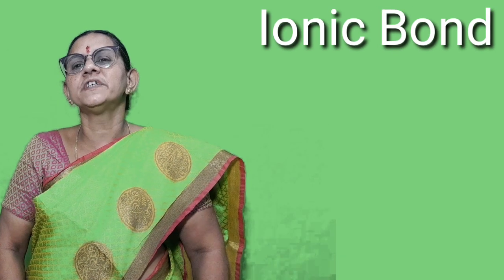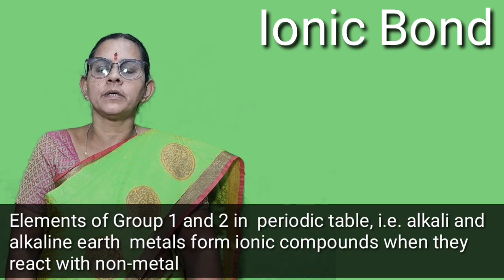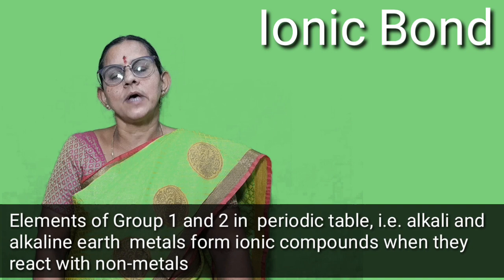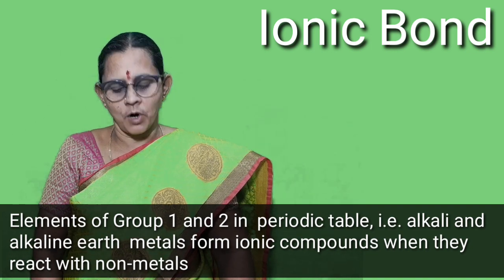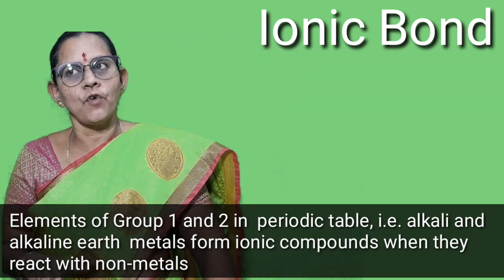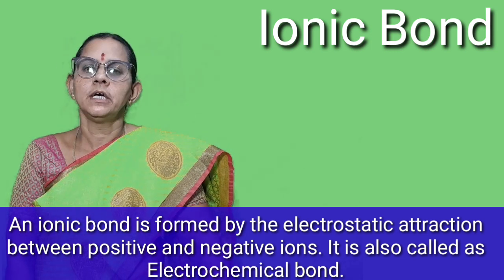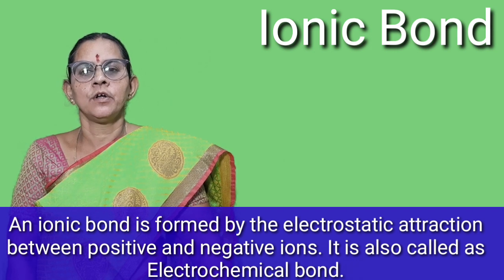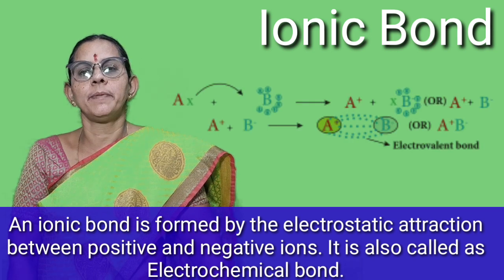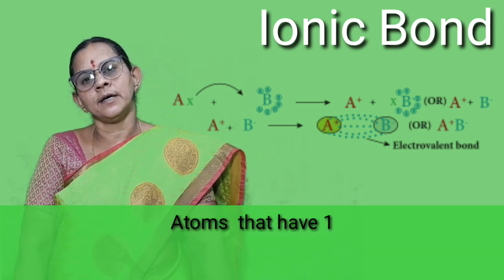Coming to types of chemical bonds — first is ionic bond. Ionic bond is formed usually among group one and group two elements of the periodic table. Alkaline metals and alkaline earth metals usually exhibit ionic bonding. It is formed between a cation and an anion — a positively charged ion and a negatively charged ion. Two atoms come together; the outermost shell electrons are called valence electrons.